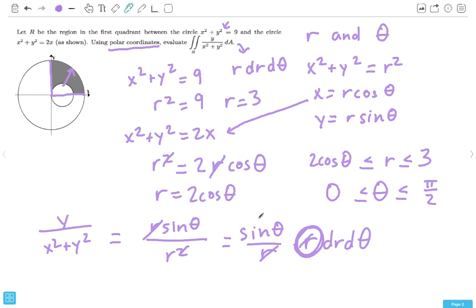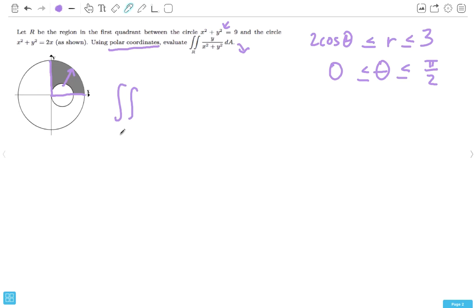Right. So, now we've got our bounds. We've got our equation that we're going to be doing a double integral of. We can start doing it. Double integral from 0 to pi over 2, 2 cosine theta to 3, of sine theta dr d theta.